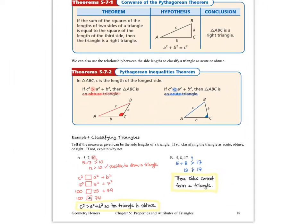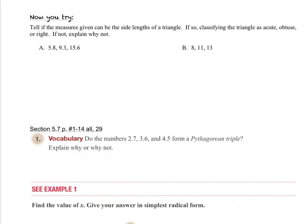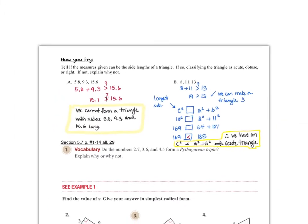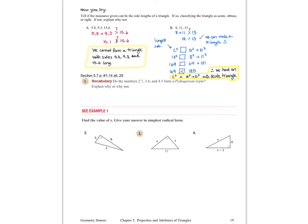You'll now have practice with the Pythagorean Inequalities Theorem with some Now You Try problems on the next page. First, check if you can create a triangle using the Triangle Inequalities Theorem, then classify the triangle as acute, obtuse, or right using the Pythagorean Inequalities Theorem. Turn the video back on when you're ready to check your answers. Always bring questions to class. You're ready to get started on your homework and then move on to Section 5.8.